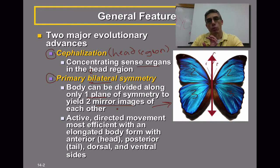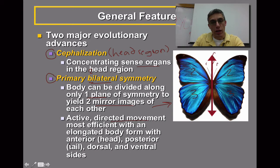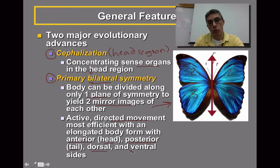This is similar to what you would see if you looked in a mirror — how printed material on a t-shirt would be reversed. These animals are one of the first groups that actually have a very active, directed type of movement. This is important because for the first time you can identify an anterior or head region, a posterior or tail region, a dorsal region, and a ventral region of the animal.